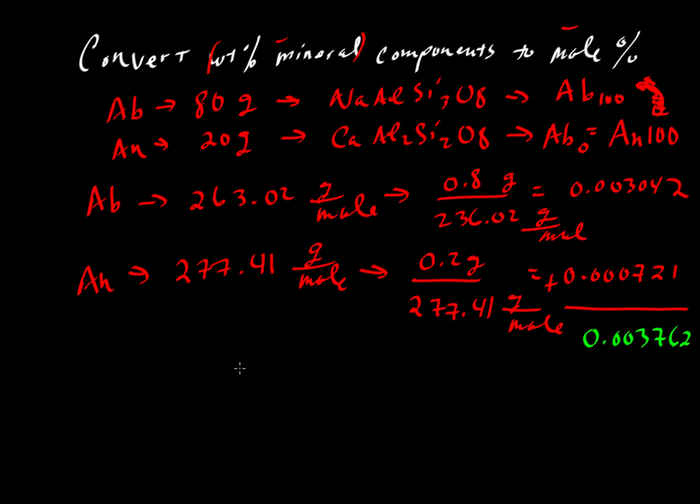We want the percentages. So to get the mole percent of albite, what we would do is simply take the number of moles of albite. So that would be 0.003042. We'll divide it by the total number of moles, 0.003762. If we want a percent, this will be multiplied by 100.